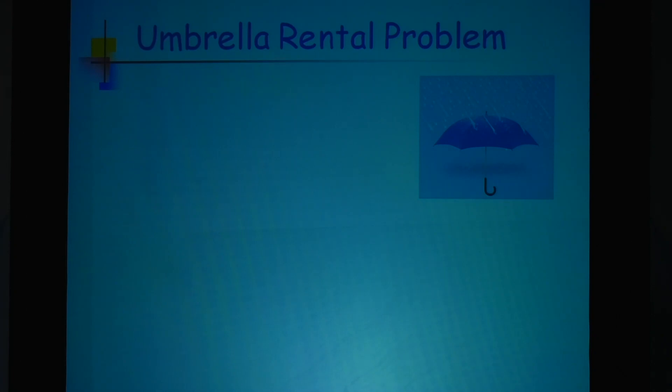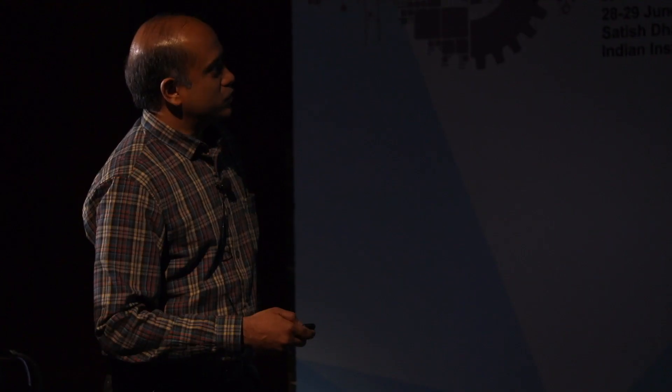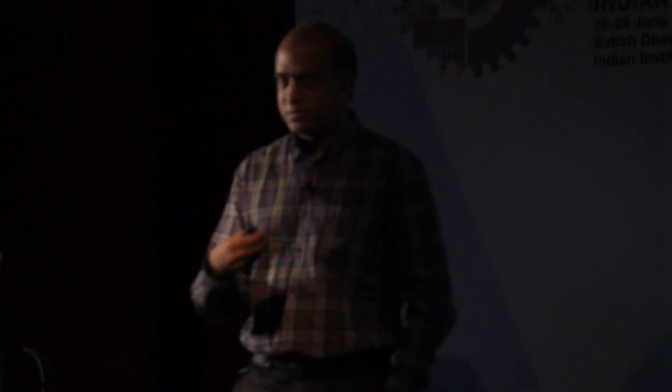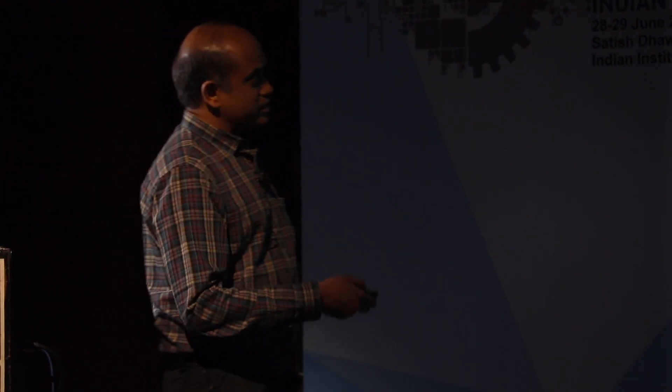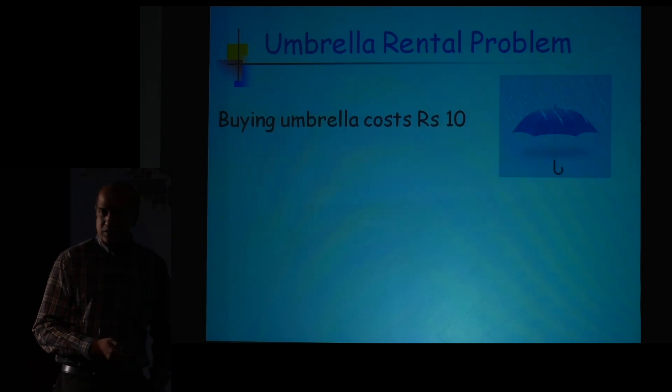Let me give you the first algorithm people study here. It is called the umbrella rental problem — in the literature it is called ski rental, but I will call it umbrella rental as it is more relevant for us. The problem is very simple to state but motivates a lot of the problems that arise in this area. The basic model is: buying an umbrella costs 10 rupees.